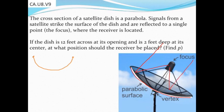That's the whole point of the satellite dish. We are given a description of a satellite dish, at least its cross-section, and asked to determine where we should place the receiver. In other words, we need to find p, the distance between the vertex and the focus.